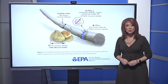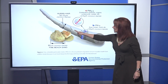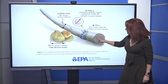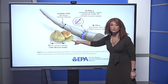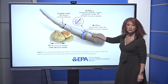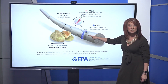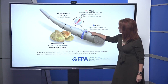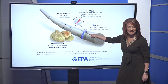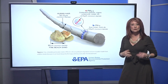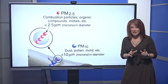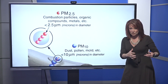For example, the EPA shows this diagram. This is a strand of hair — think about that. And this right here is fine beach sand. These blue dots are dust, pollen, and mold. And then these little bitty red dots on those blue dots — those are the particles found in wildfire smoke.